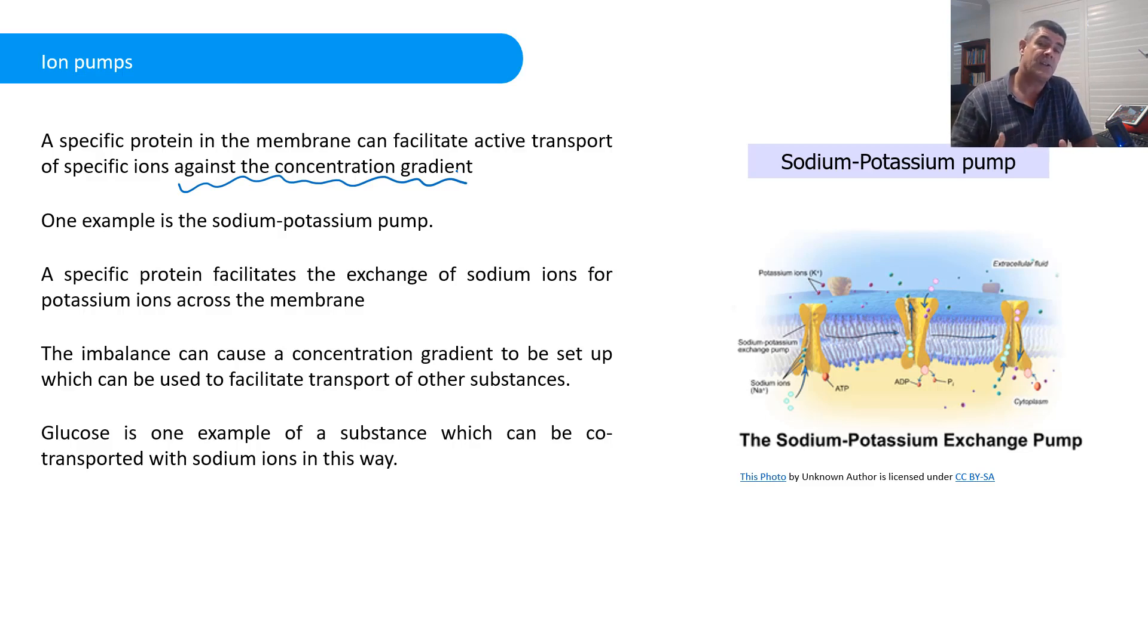In order for this particular process to occur, we need specific proteins to facilitate the exchange of the sodium ions for potassium ions across the cell membrane. So we are actually doing an exchange here of sodium ions for potassium ions. And that may not necessarily occur as a passive process, which means, of course, we need energy to facilitate that process.